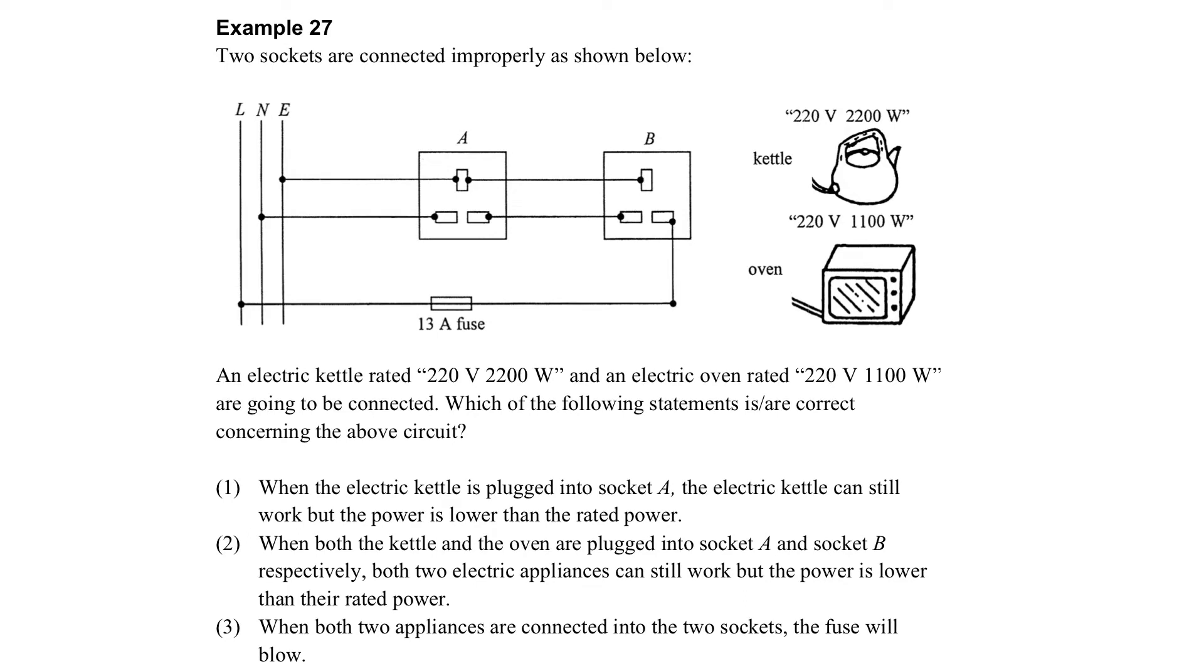Let's see the examples here. You can see that this is an improper connection. Now how is it improper? You can see that these two sockets are not connected in parallel. Well, the two sockets are connected in series.